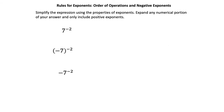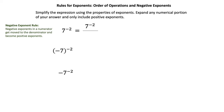In these next three examples we look at negative exponents with the order of operations. The negative exponent rule says that when you have negative exponents in a numerator, they get moved to the denominator and become positive exponents. For 7 to the negative 2, we move it to the denominator and change negative 2 to positive 2, placing a 1 in the numerator: 1 over 7 squared. Multiplying 7 times 7 gives a final answer of 1 over 49.